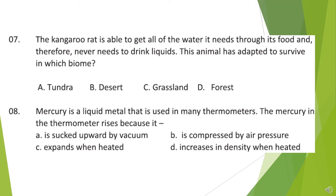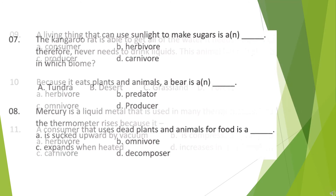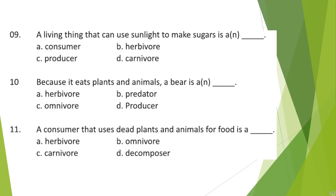Question 8: Mercury is a liquid metal that is used in many thermometers. The mercury in the thermometer rises because it? Question 9: A living thing that can use sunlight to make sugars is a? Look at the options and choose your answer. Question 10: Because it eats plants and animals, a bear is a?